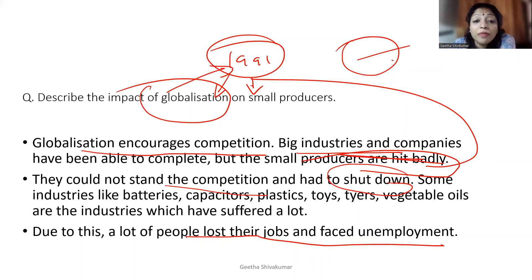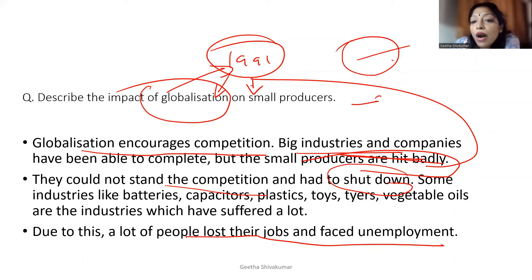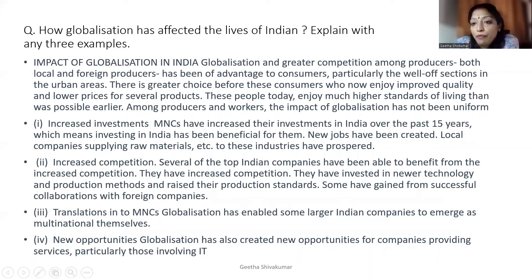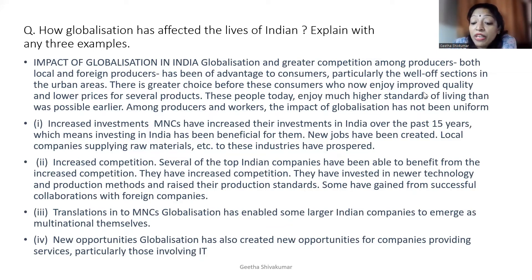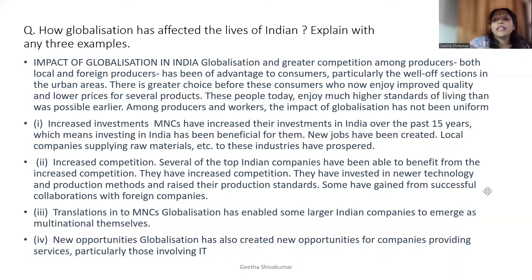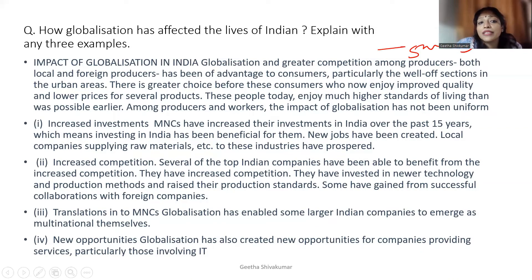To summarize the impact on small producers: they could not compete with big industries, had to shut down, and caused widespread job losses. This question can come for two marks, so out of three points you can write any two. Next question: How has globalization affected the lives of Indians? This is a five-marks question.